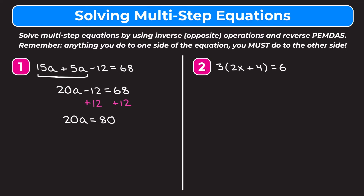We have 20a equals 80. To get rid of the 20 which is being multiplied, we do the inverse which is division. We divide both sides by 20. On the left the 20s cancel out leaving a. On the right 80 divided by 20 gives us 4. So our final answer is a equals 4.